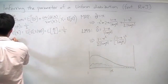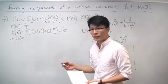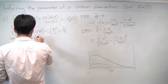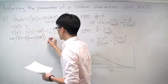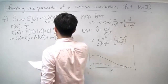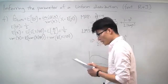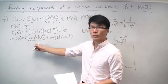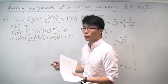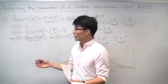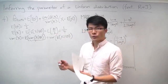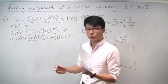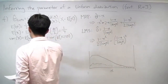Now let's calculate the variance of x using the law of total variance: Var(x) equals the expectation of the conditional variance plus the variance of the conditional expectation. Given theta, x is uniformly distributed between 0 and theta, and for a uniform distribution of width c the variance is c squared over 12. So the conditional variance of x given theta is theta squared over 12. The conditional expectation of x given theta is theta over 2.